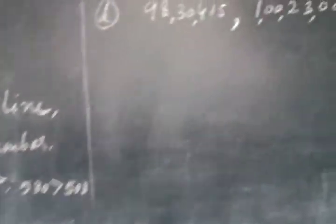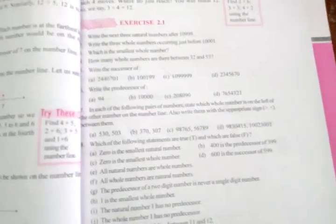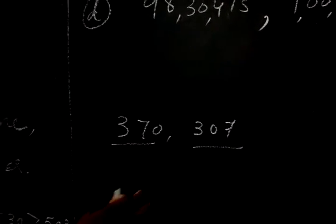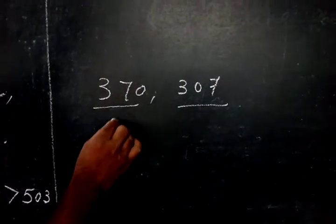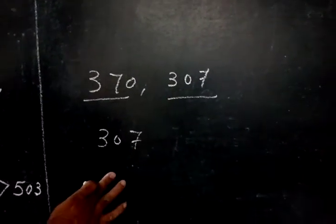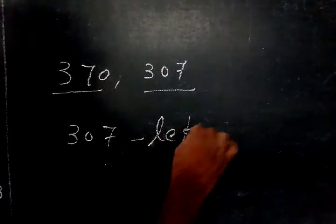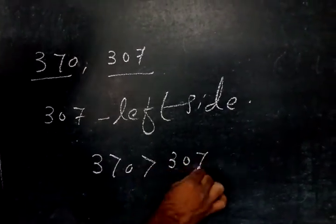Now see the second number: 370 and 307. Both numbers have 3 digits, so we are very familiar with three-digit numbers and can justify very easily. 370 is bigger than 307, so 307 is lying on the left side. And the sign: 370 is greater than 307.